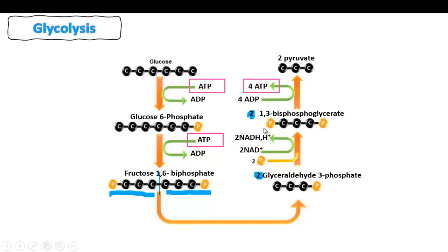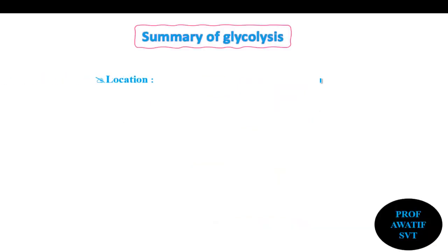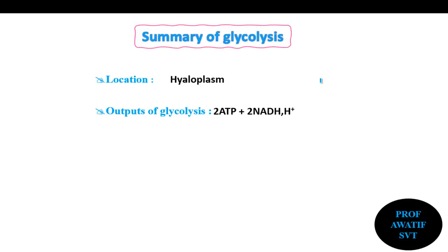Glycolysis also generated 2 NADH in this process, and the end product is 2 pyruvate molecules that still store energy. Importantly, all the glycolysis reactions occur in the presence or the absence of oxygen. To summarize: glycolysis reactions happen in the cytoplasm or hyaloplasm, and the output of glycolysis is 2 ATP and 2 NADH, in addition to 2 pyruvate molecules.